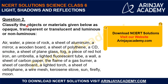Coming to Question 2: Classify the objects or materials given below as Opaque, Transparent, or Translucent, and Luminous or Non-Luminous. So we have five categories here — Opaque, Transparent, Translucent, Luminous, and Non-Luminous — and we have a list of objects or materials that we must classify into the respective groups where they belong.